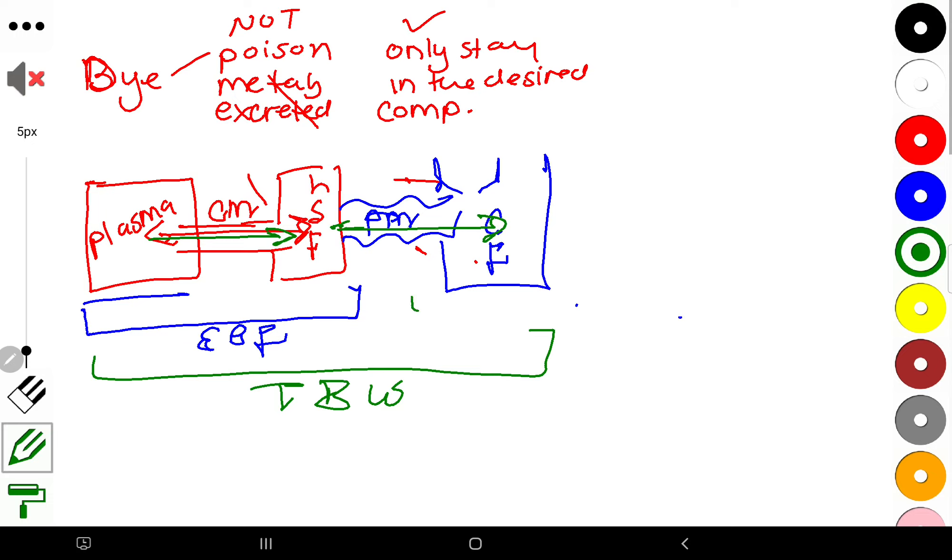Now, usually we don't have one that just goes through to the intracellular. So what we do is we can get the total body water and we can get the extracellular. Then we say total body water minus extracellular fluid will give us the intracellular fluid.